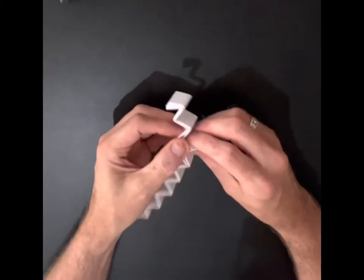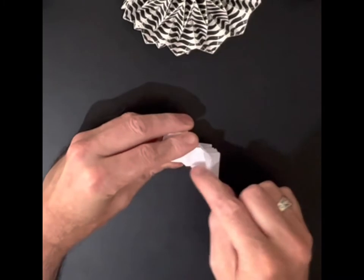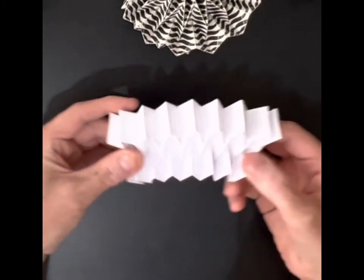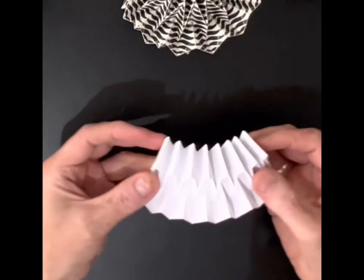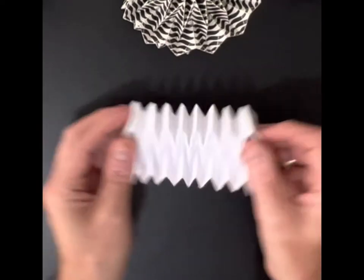Now this is what we call the paw fold and a 90 degree angle here. Already you're starting to see that classic herringbone fold.